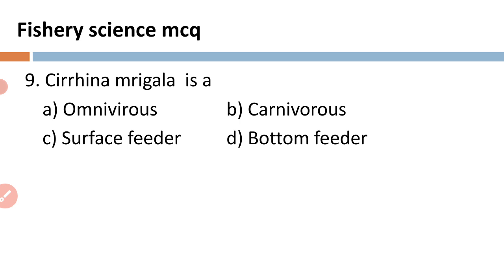Cirrhina mrigala is — A) omnivorous, B) carnivorous, C) surface feeder, and D) bottom feeder. Cirrhina mrigala is one of the species belonging to the major carps, and Cirrhina mrigala is a bottom feeder.